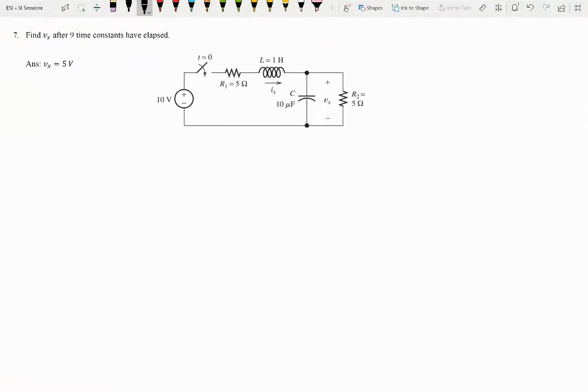Let's take a look at question 7. This gives us a circuit with an inductor, capacitor, and a couple of resistors in there.